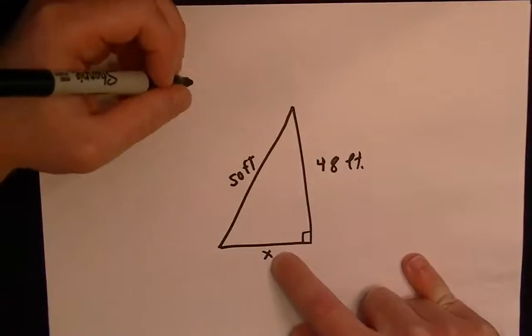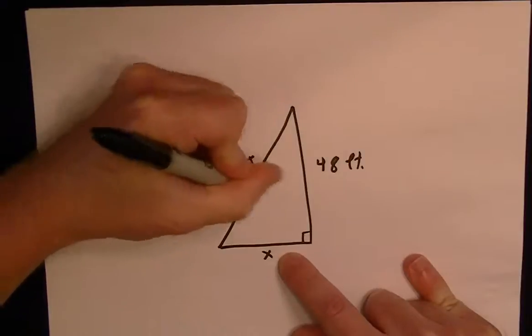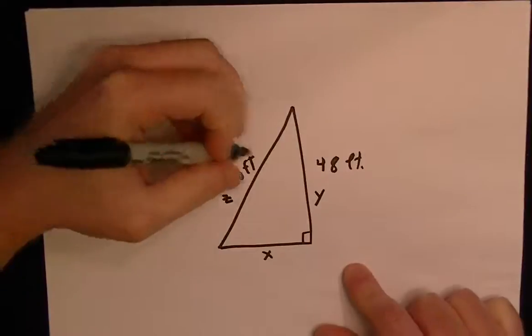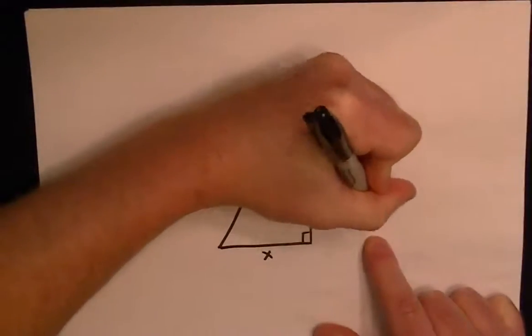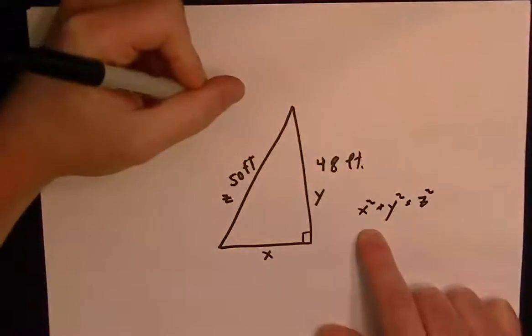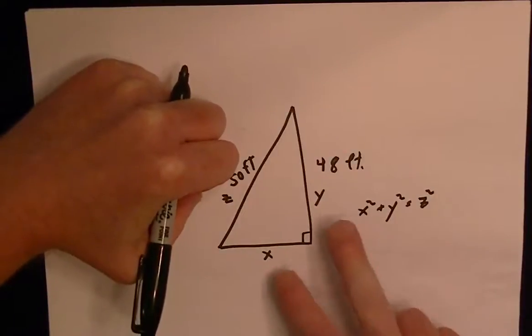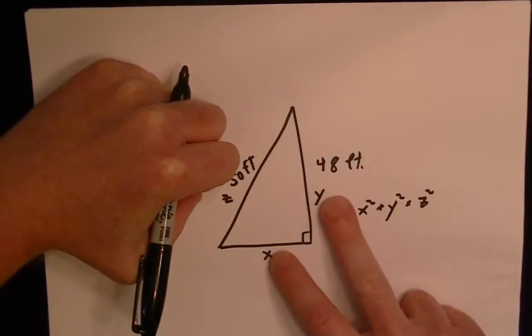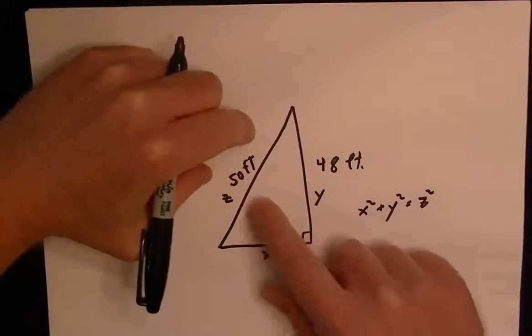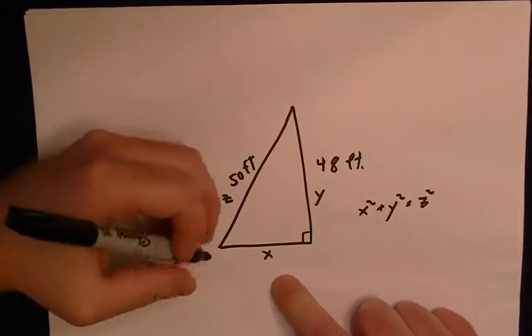Basically, if we had a side x, y, and z, the theorem is x squared plus y squared equals z squared. So we already have the z and the y, so we have to find the x. It's always this side squared plus this side squared is equal to the hypotenuse squared. So the hypotenuse is the side that's opposite of the right angle.